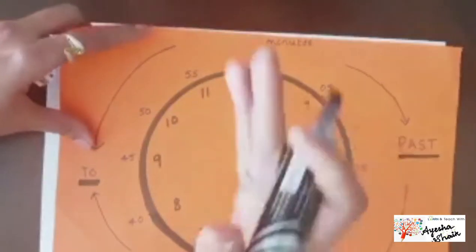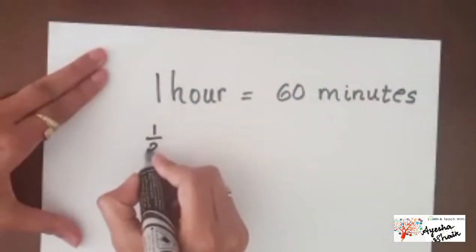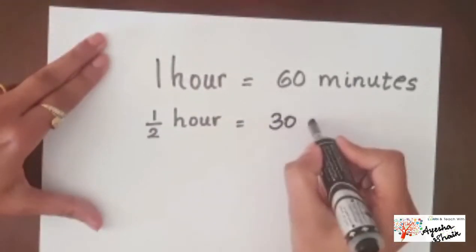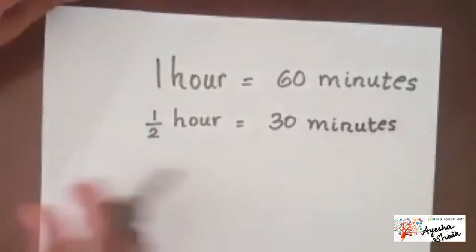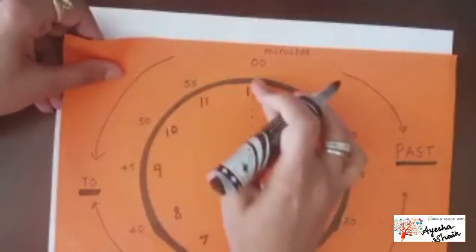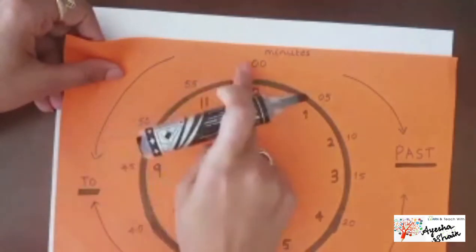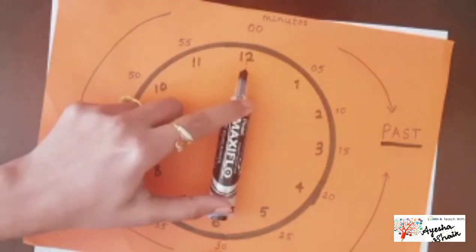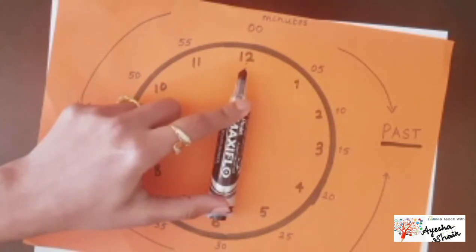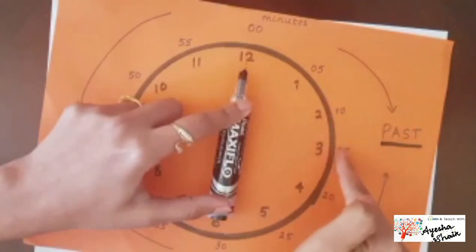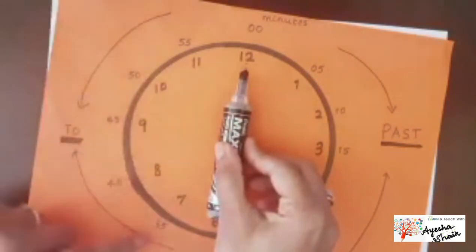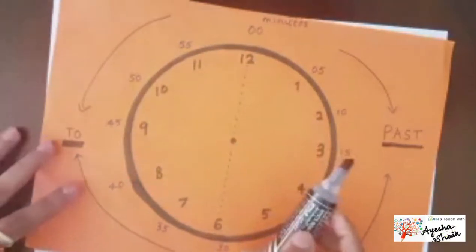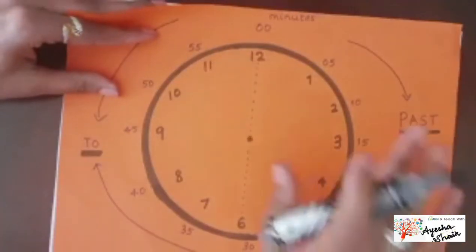Now what is half of 60? Half an hour is 30 minutes. So on the clock, from the 12 to the 6 is 30 minutes, and from the 6 back to the 12 is another 30 minutes. We can verify by skip counting in fives from the 12: 5, 10, 15, 20, 25, 30 — yes, 30 minutes in half an hour.